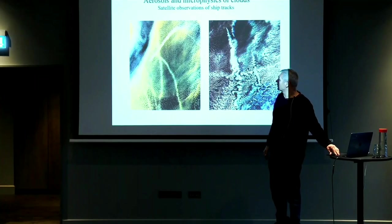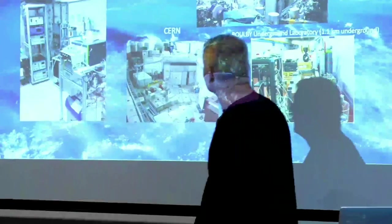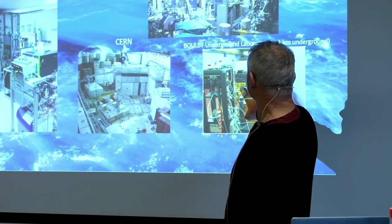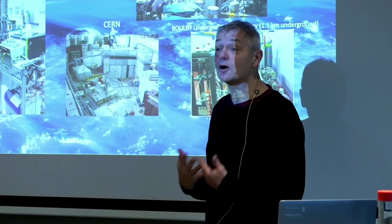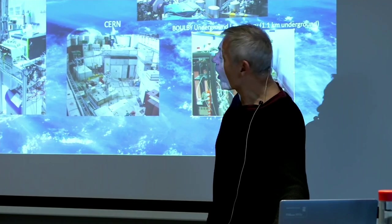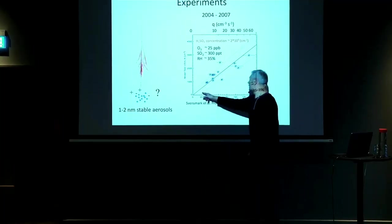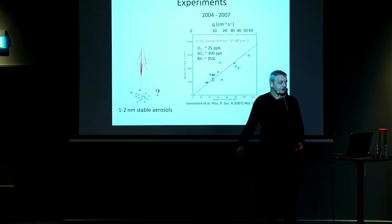With all of this, we did a lot of experiments to test whether such a microphysical mechanism existed — at the Danish Technical University, at CERN in Geneva, and even in a mine in England 1.1 kilometers below the surface, because you have to go that far down to avoid cosmic rays. All these experiments show one thing: when you have ionization, you actually stabilize these small clusters and produce more of them. As you increase the ionization, the number of small aerosols increases.